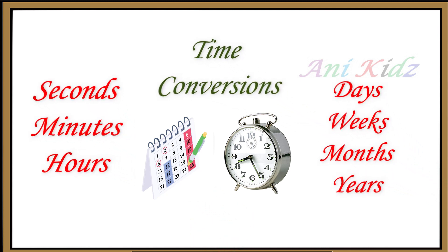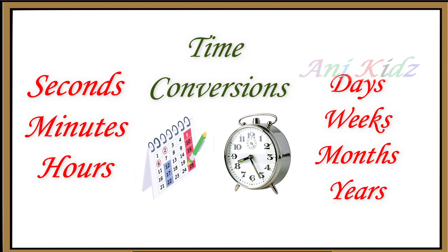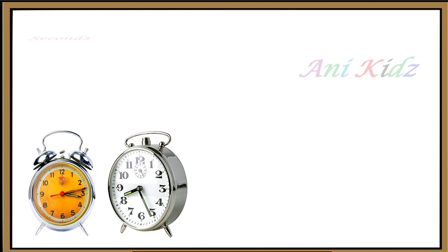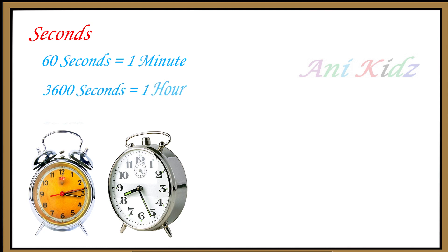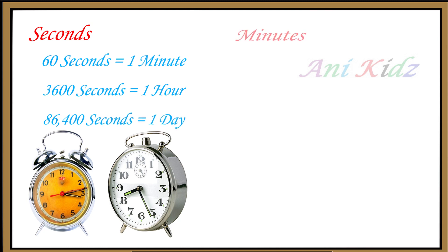Children, let's say again. I will say time conversions — smaller units and bigger units. Smaller units are seconds, minutes and hours. The bigger units are days, weeks, months and years. Listen carefully children. Sixty seconds is equal to one minute. Three thousand six hundred seconds is equal to one hour. Eighty-six thousand four hundred seconds is equal to one day.